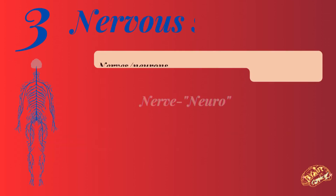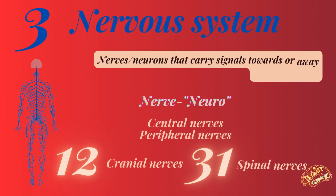Number three: the nervous system. It involves nerves and neurons that carry signals towards or away from our brain. The nerve is termed as 'neuro'. There are two types of nervous system: central and peripheral. We have 12 pairs of cranial nerves and 31 pairs of spinal nerves.